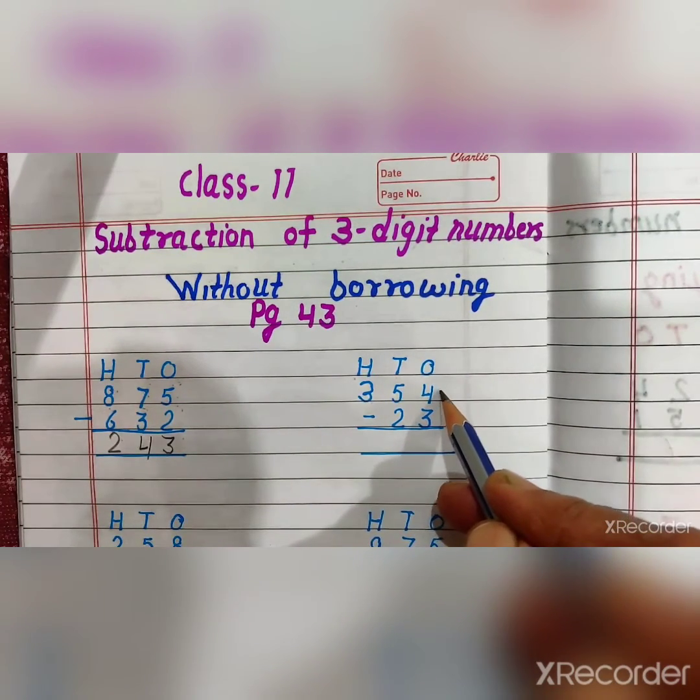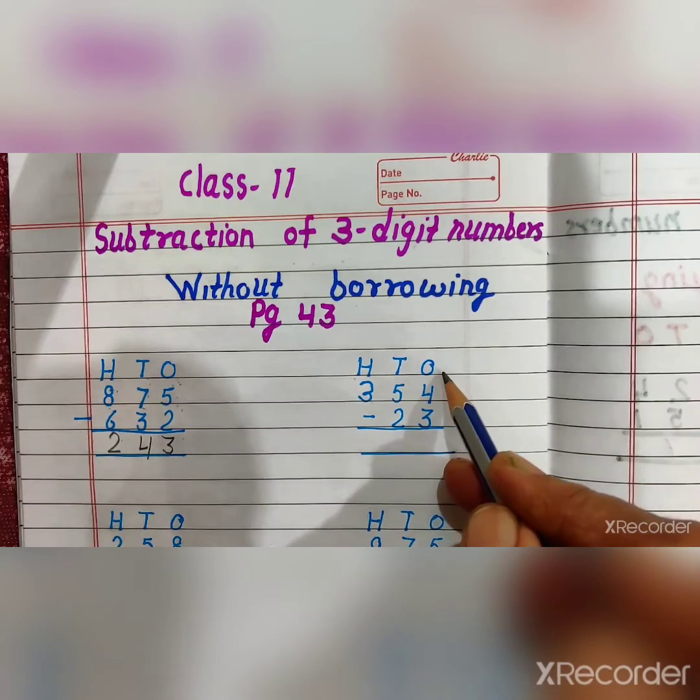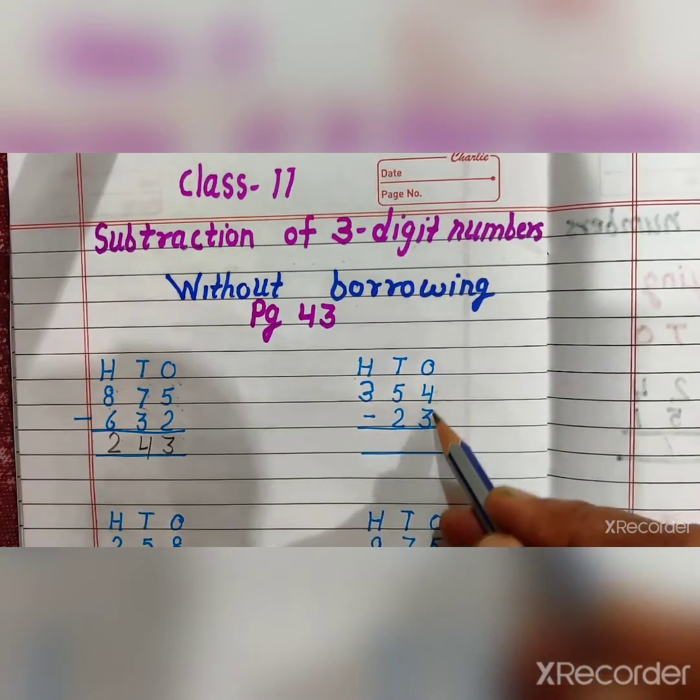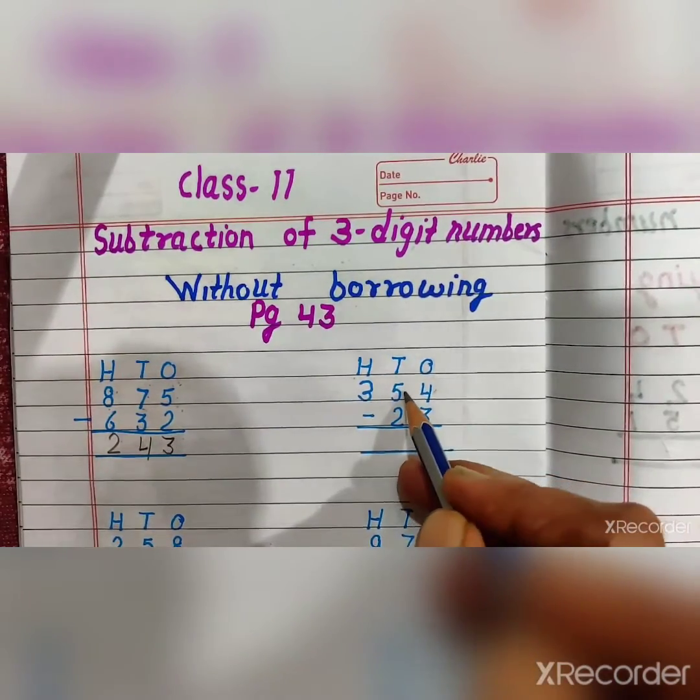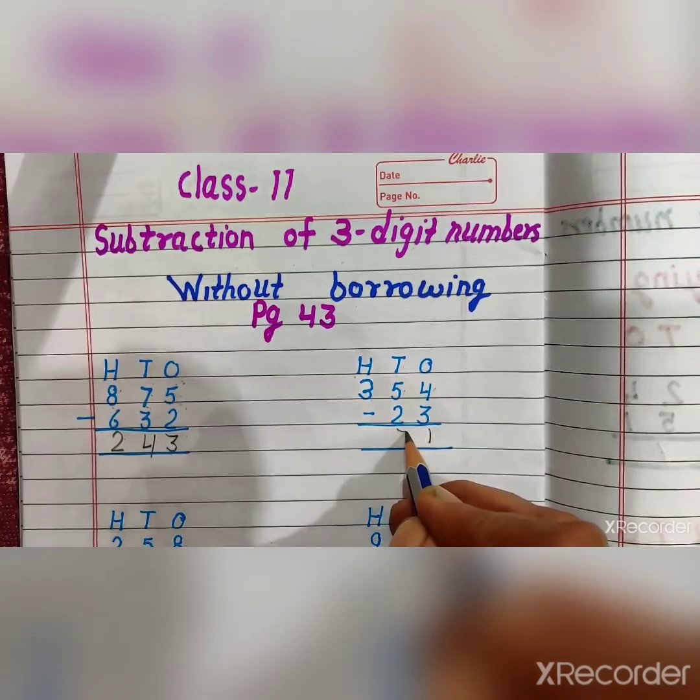You will start with one's place. 4 minus 3. 4 minus 3 is equal to 1. And 5 minus 2 is equal to 3.